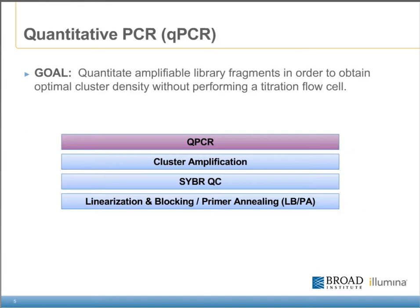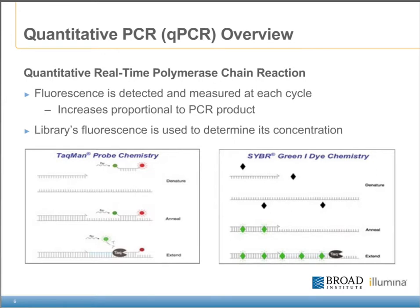Quantitative PCR, or qPCR, is used to quantify the concentration of amplifiable library fragments. The result can then be used to optimize cluster density on a flow cell without requiring a titration flow cell for every library. Fluorescence is detected at each cycle of PCR; as the amount of DNA increases, so does the fluorescence. Control samples with known concentrations are amplified alongside the experimental library, allowing you to determine the library's concentration by comparing its fluorescence to that of the control sample. There are two main types of qPCR: TaqMan probe chemistry and CyberGreen dye chemistry. We have found that CyberGreen dye chemistry is a simple workflow and works very well with our libraries and the qPCR instrument we use.